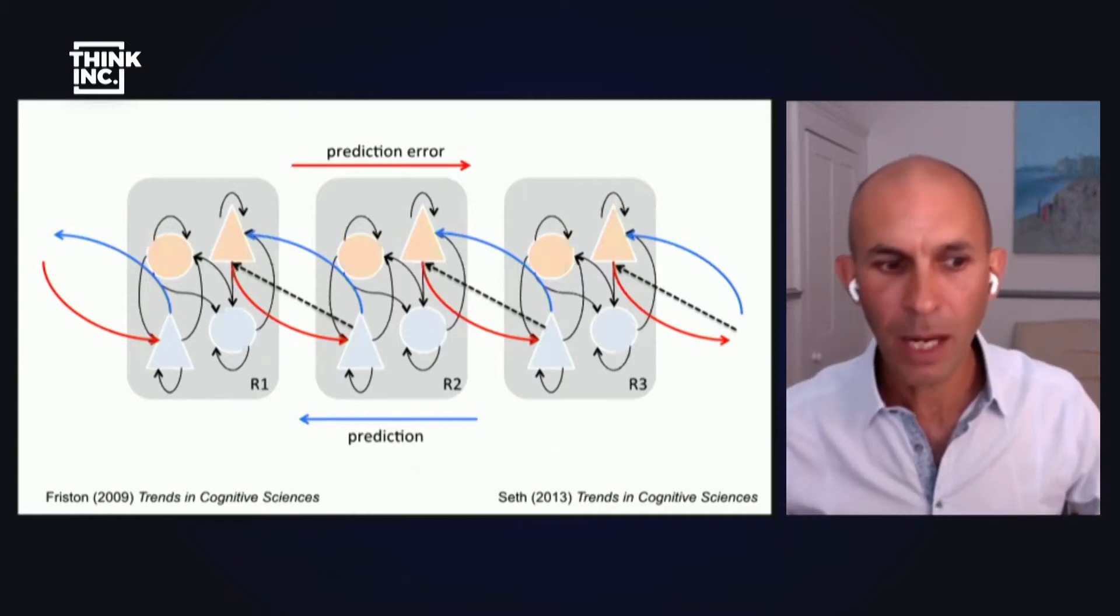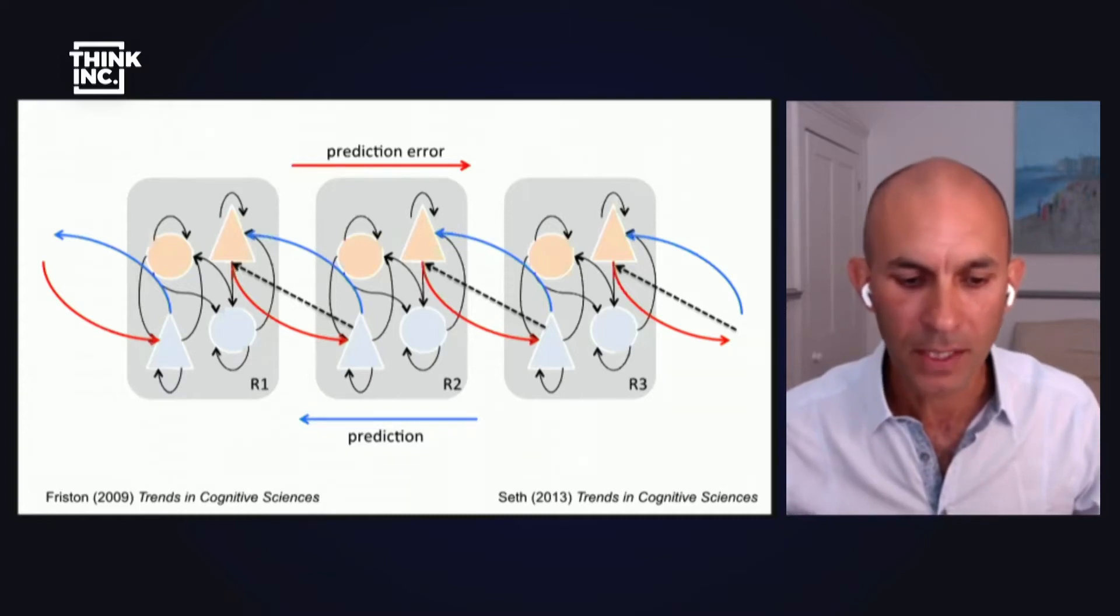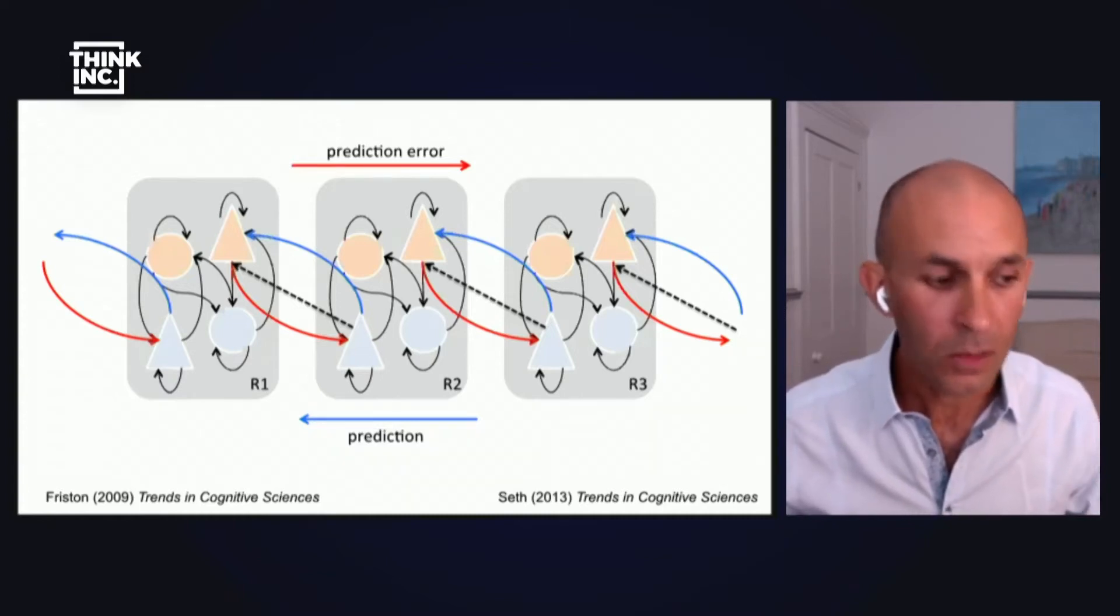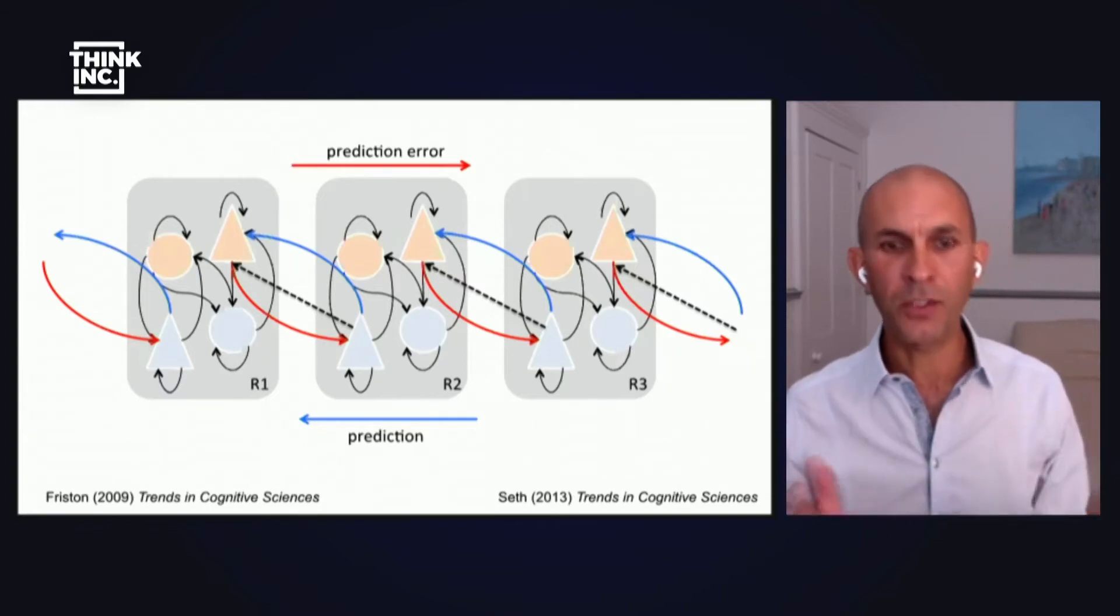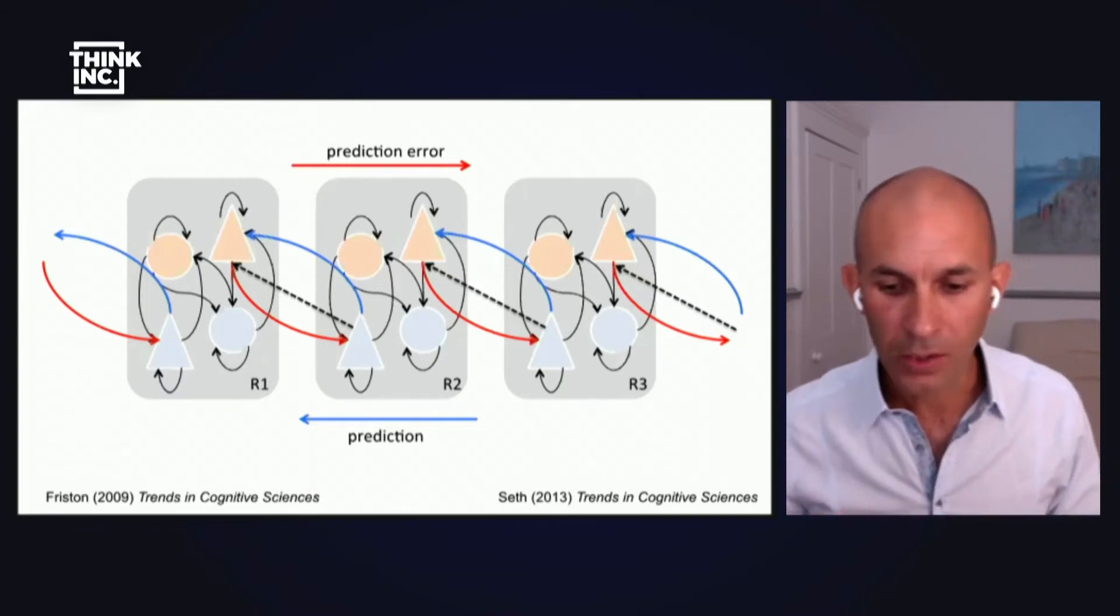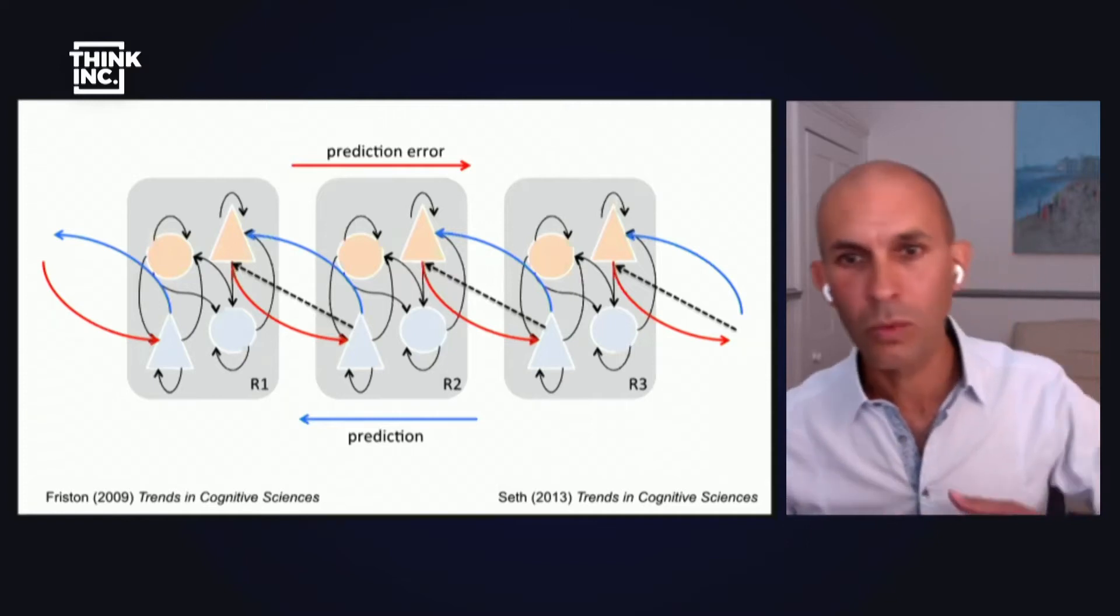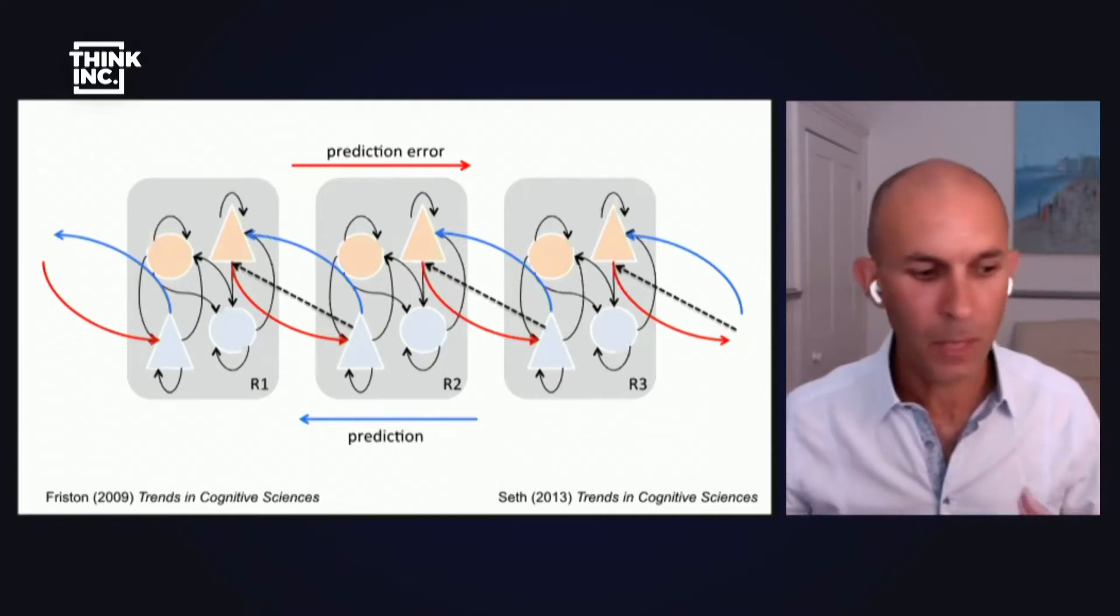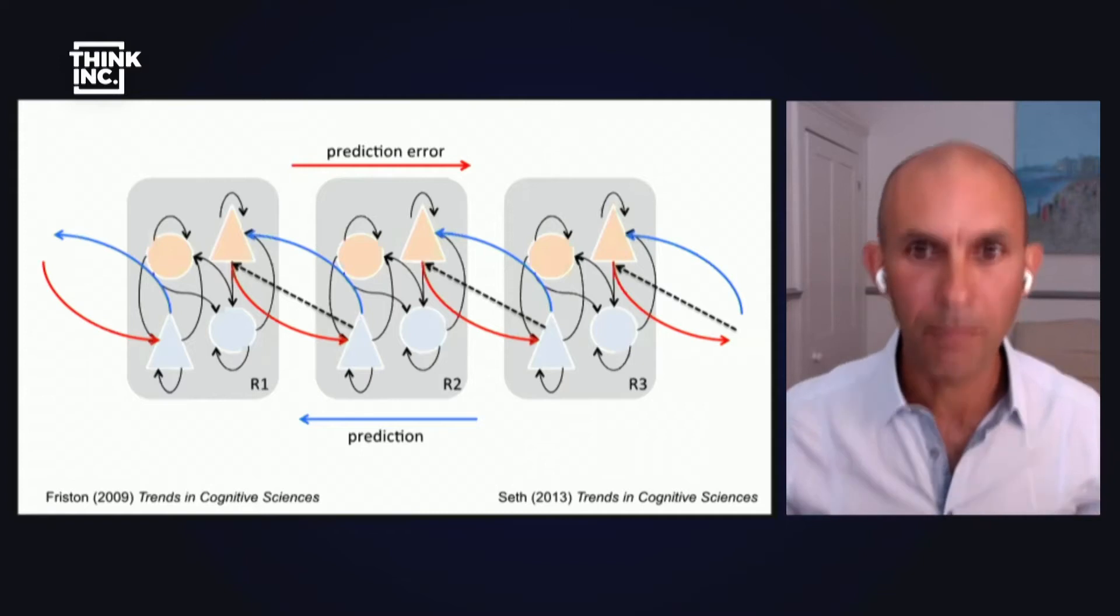Perception here isn't about reading out sensory information. It's this process of calibration of the brain's best guesses against an unknown and ultimately an unknowable world. For those interested in more of the details, this process of prediction error minimization amounts to an approximation to a mathematical technique called Bayesian inference. What the brain is doing in this sense is approximate Bayesian inference on the causes of sensory signals. So the predictive brain is also a Bayesian brain.